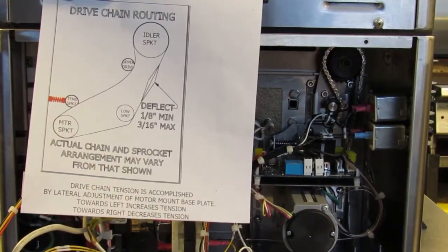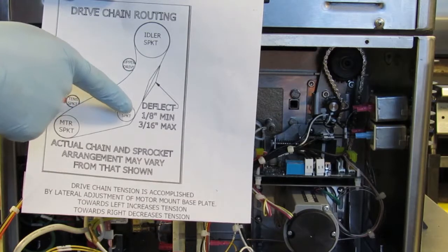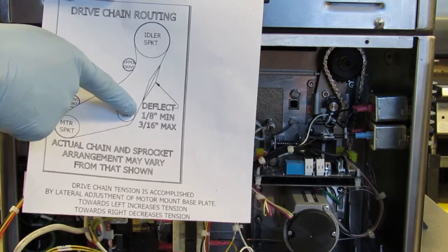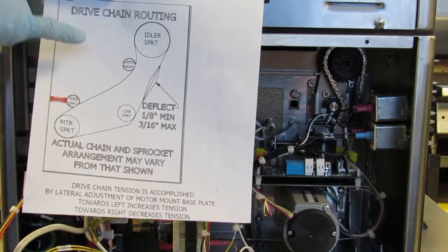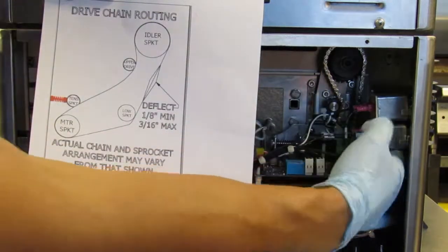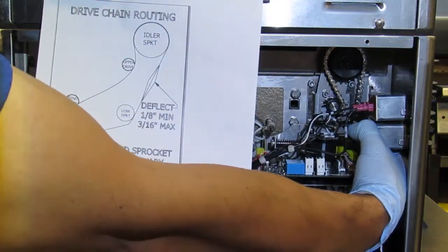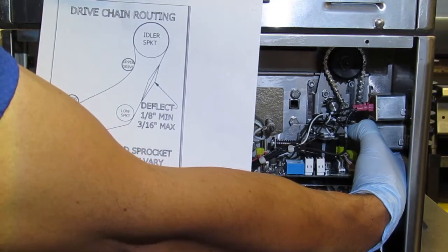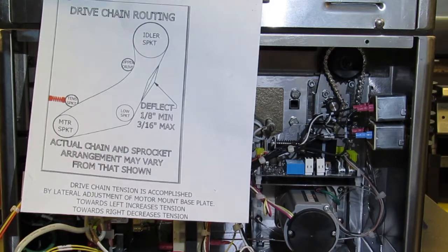The drive chain must contain a minimum of one-eighth inch deflection, up to a maximum of three-sixteenths inch deflection across this range here, which is located here. As you can see, I'm well beyond three-sixteenths maximum deflection, therefore I need to tighten up the chain tension.